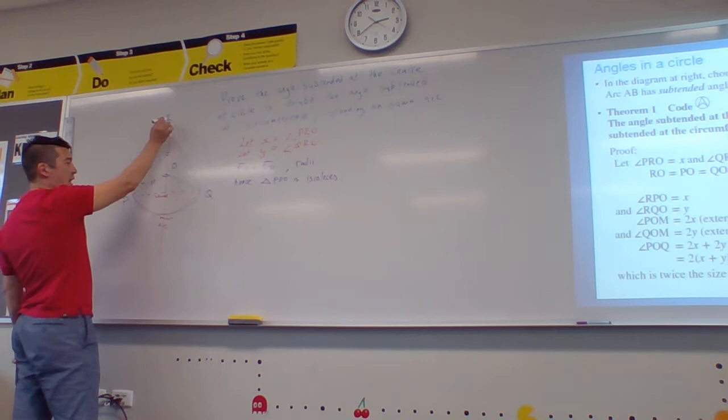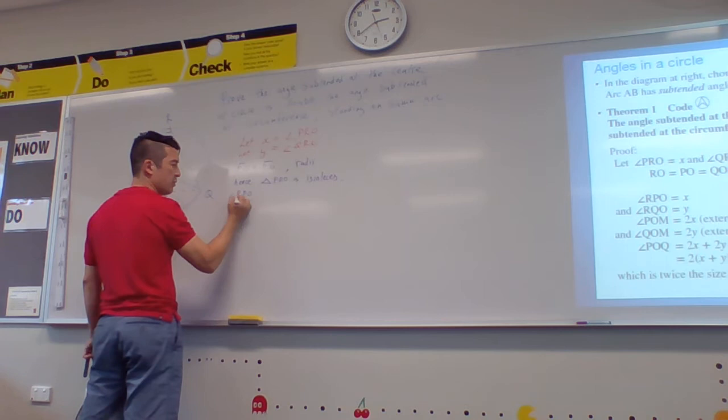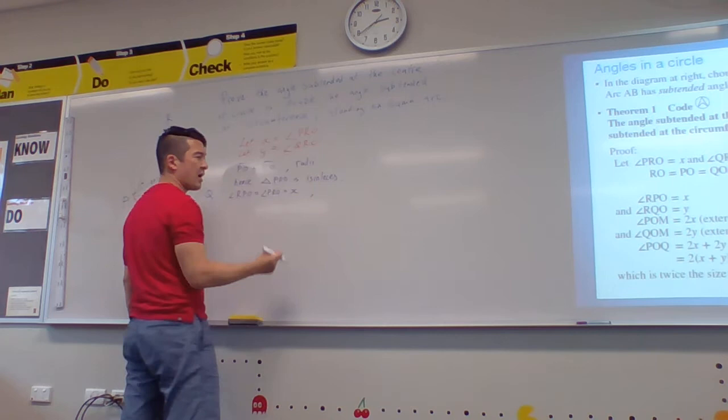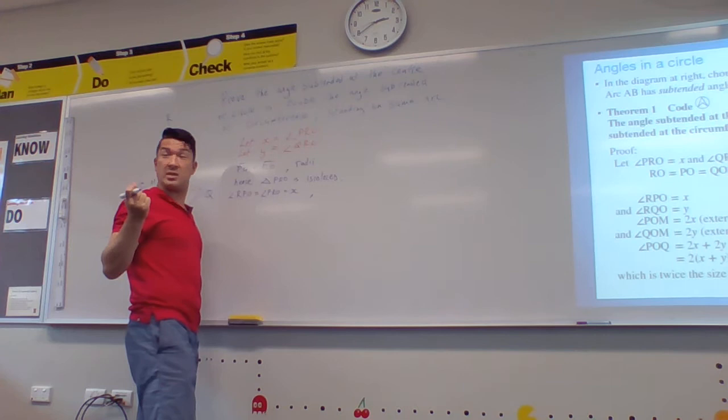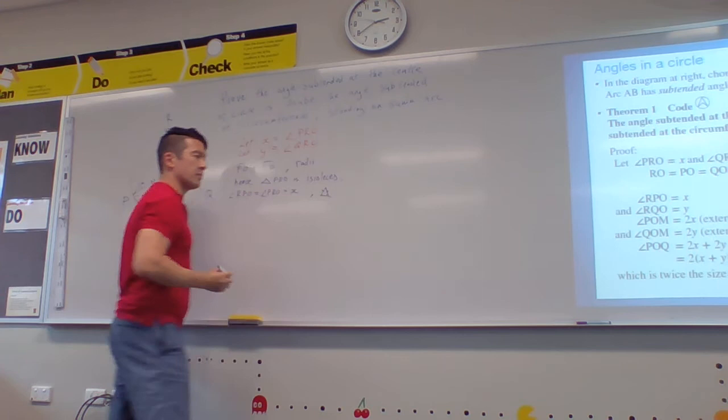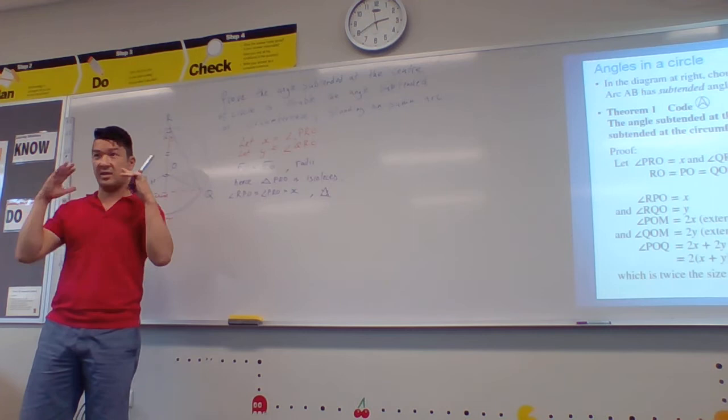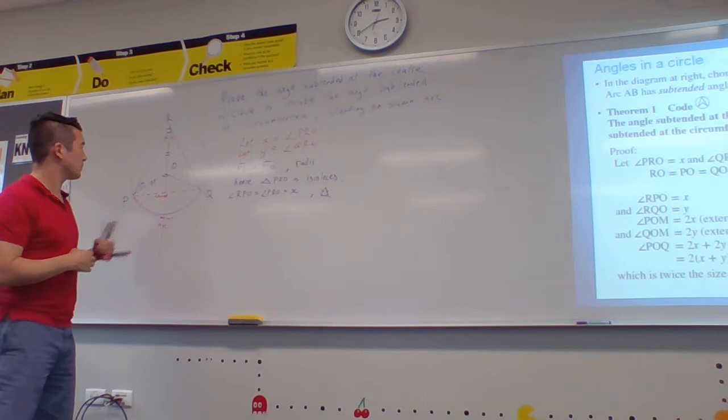Now, because they are isosceles, if that's X then this must be X. So now I can write angle RPO equals angle PRO equals X. And rather than saying because they are isosceles, there is a trick, a little symbol that I can do. I just literally draw an isosceles triangle. That's the reason.